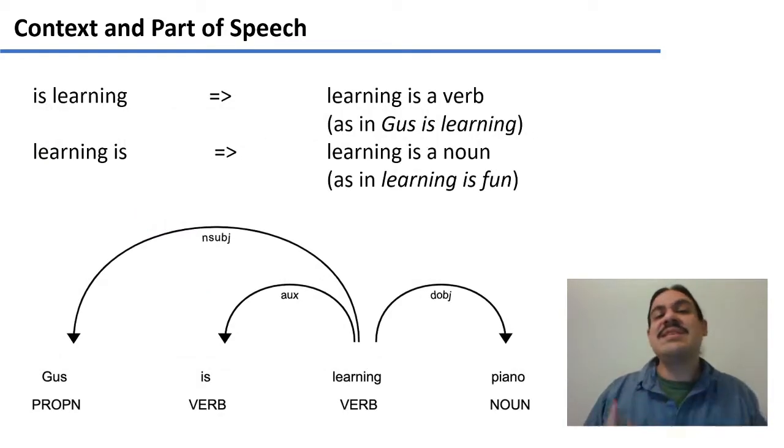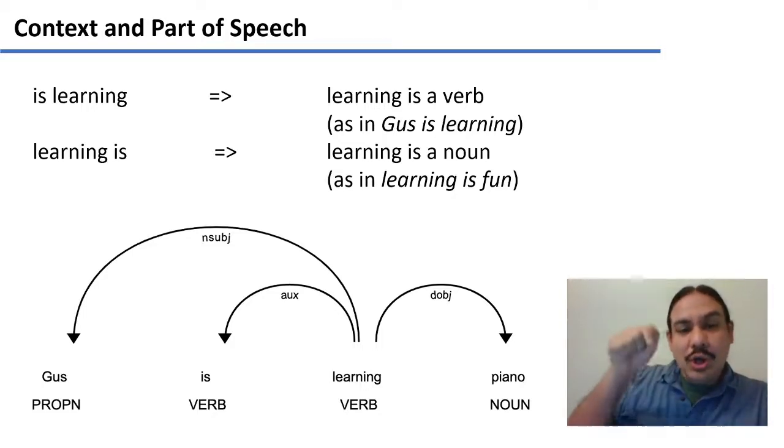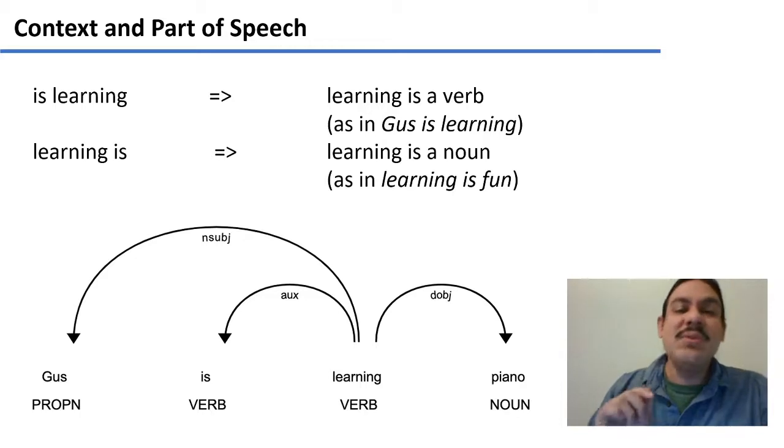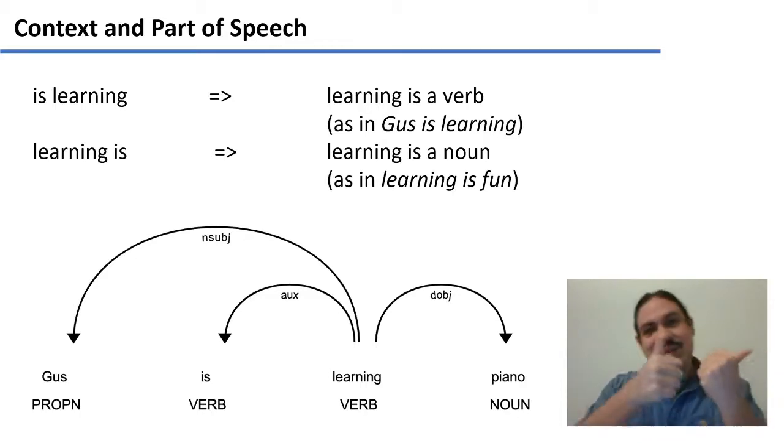And this behavior is sensitive to context. Look at how sensitive it is. If you flip the order of words, then the part of speech can change. For example, in the sentence, Gus is learning piano. The word learning is a verb because it's what Gus is doing. He is learning. And we know it's a verb because the previous word is is. Is learning.